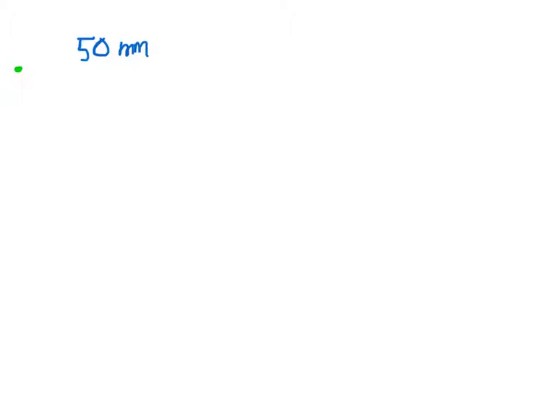Let's consider another normal distribution. Machines in a manufacturing process are set to produce nails at 50 millimeter lengths. But due to some random variations, if we measure closely, we see that nails could be slightly above or below that average — we could get 49.7 millimeter nails or 50.2 millimeter nails — and we're going to have more nails closer to 50 and fewer nails farther away.